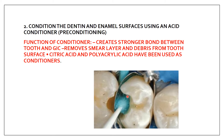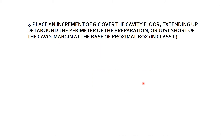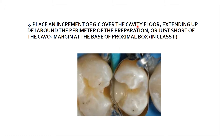After cavity preparation, for a class 2 cavity, you perform the matricing system to build up the wall. Then preconditioning is done with polyacrylic acid. Next, you place an increment of GIC over the cavity floor, extending up to the DEJ around the perimeter of the preparation, or just short of the cavosurface margin at the base of the proximal box. This is the placement of GIC in class 2.